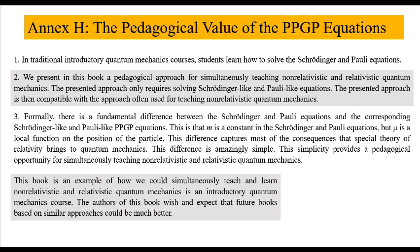The presented approach is then compatible with the approach often used for teaching non-relativistic quantum mechanics. 3. Formally, there is a fundamental difference between the Schrödinger and Pauli equations and the corresponding Schrödinger-like and Pauli-like PPGP equations. This is that m is a constant in the Schrödinger and Pauli equations, but mu is a local function on the position of the particle. This difference captures most of the consequences that special theory of relativity brings to quantum mechanics. This difference is amazingly simple.